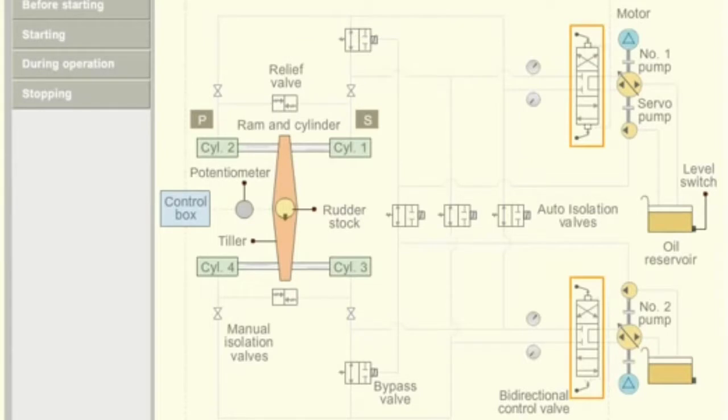The directional control valve changes the direction. Automatic and manual isolation valves isolate the defective system in case of emergency. Bypass valves for each set of RAMs bypass the defective RAMs when isolated. Relief valves maintain the system oil pressure within limits.